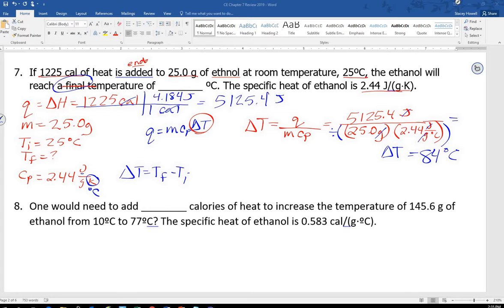So I plug in. Q, 5125.4 joules divided by mass, 25 grams, times by the specific heat, 2.44 joules per gram degrees Celsius. Grams go out, joules go out, I'm left with degrees Celsius. Remember when you do this in your calculator you've got to hit the divide and then you've got to have parentheses around those. So what do we get for delta T? 84 degrees.